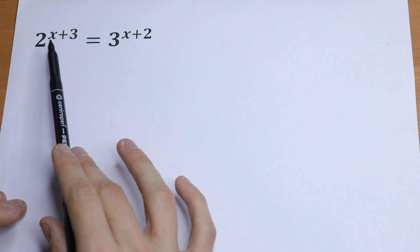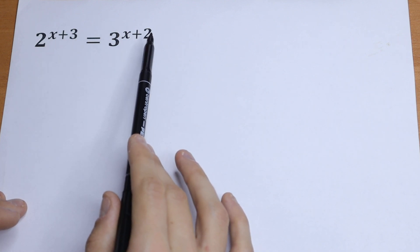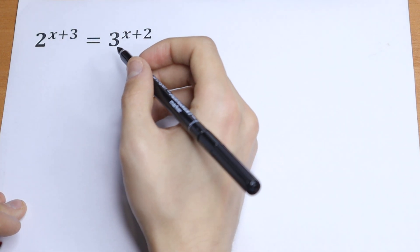We have x plus 3 on the left, x plus 2 on the right, so we can break this exponent, this power.